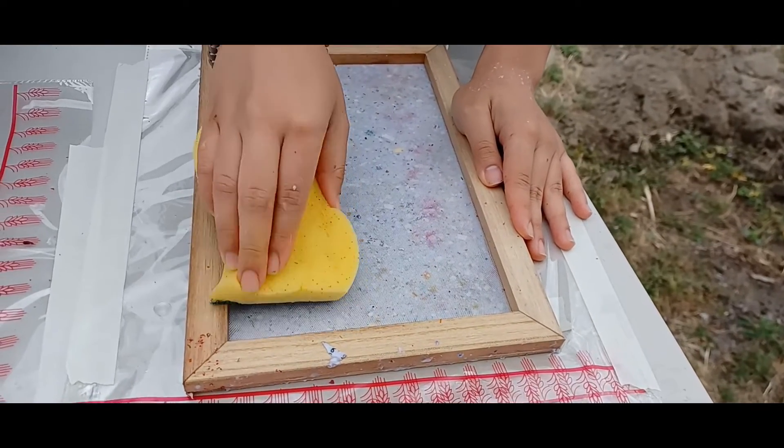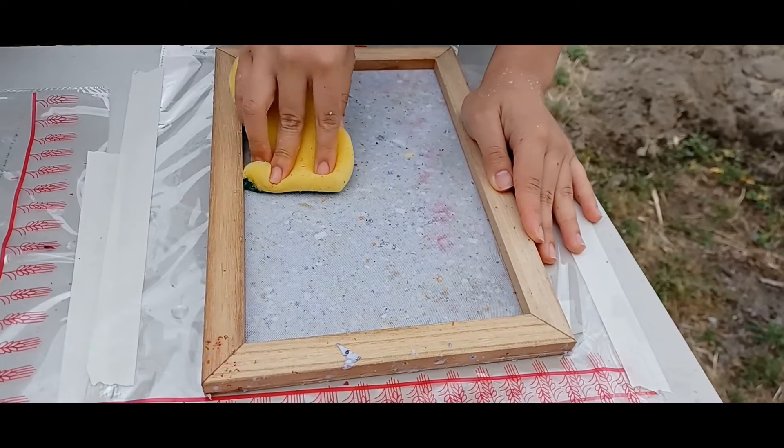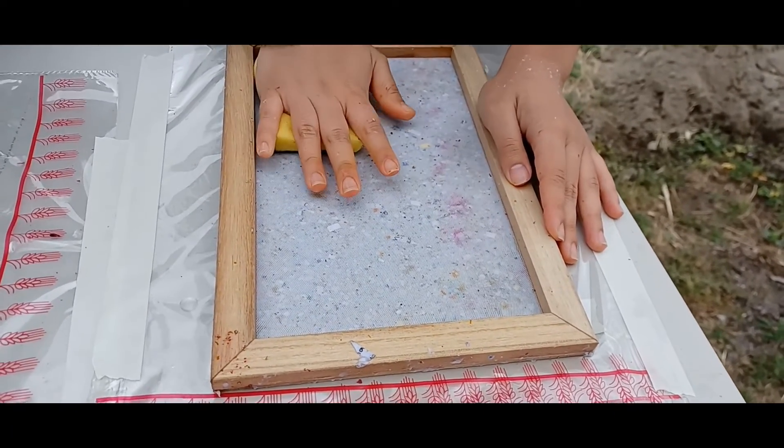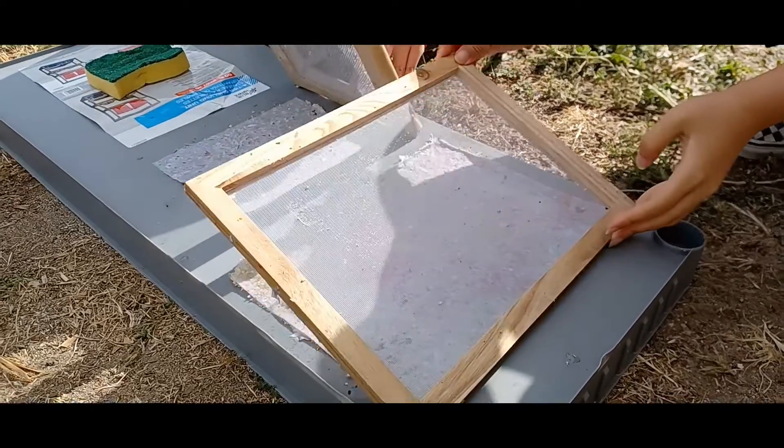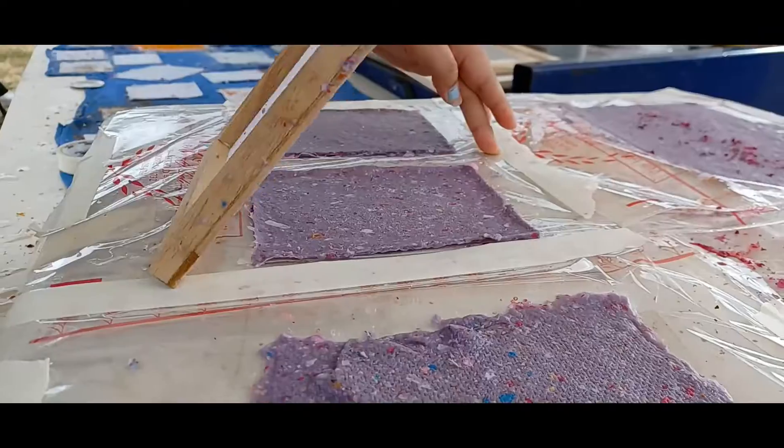That way it'll be easier to remove and you'll have your perfectly shaped piece of paper. Once you're ready, you're then going to gently lift up your mold and decal to reveal your perfectly shaped piece of paper.